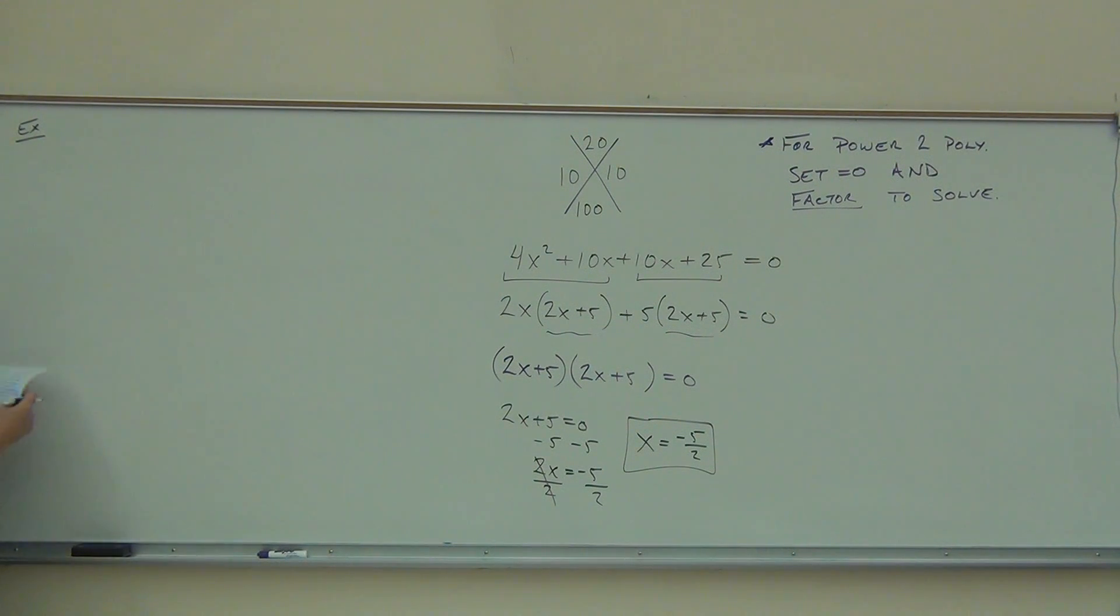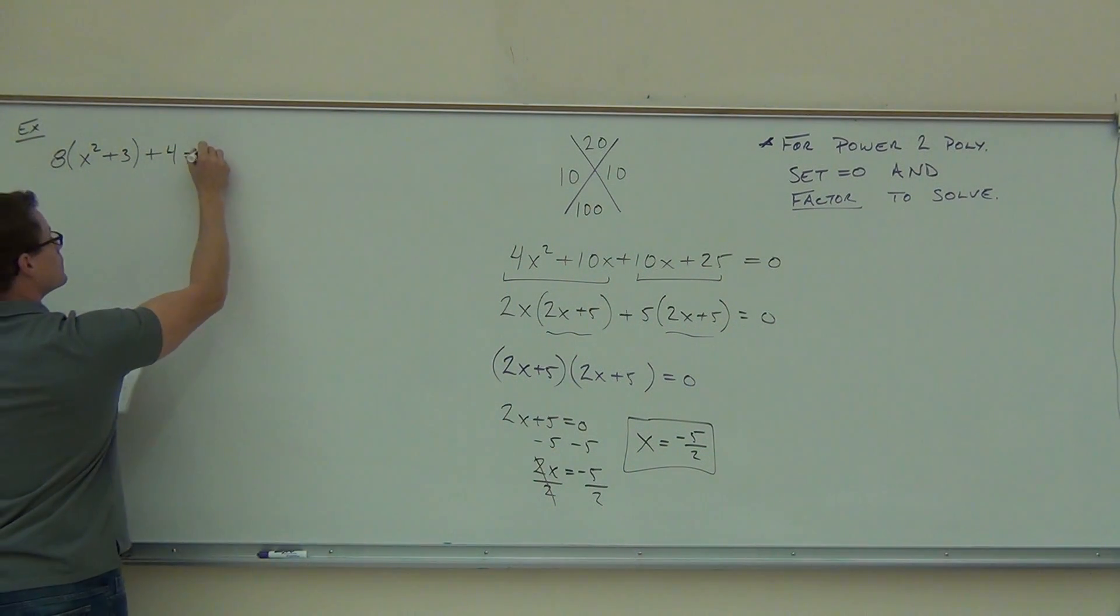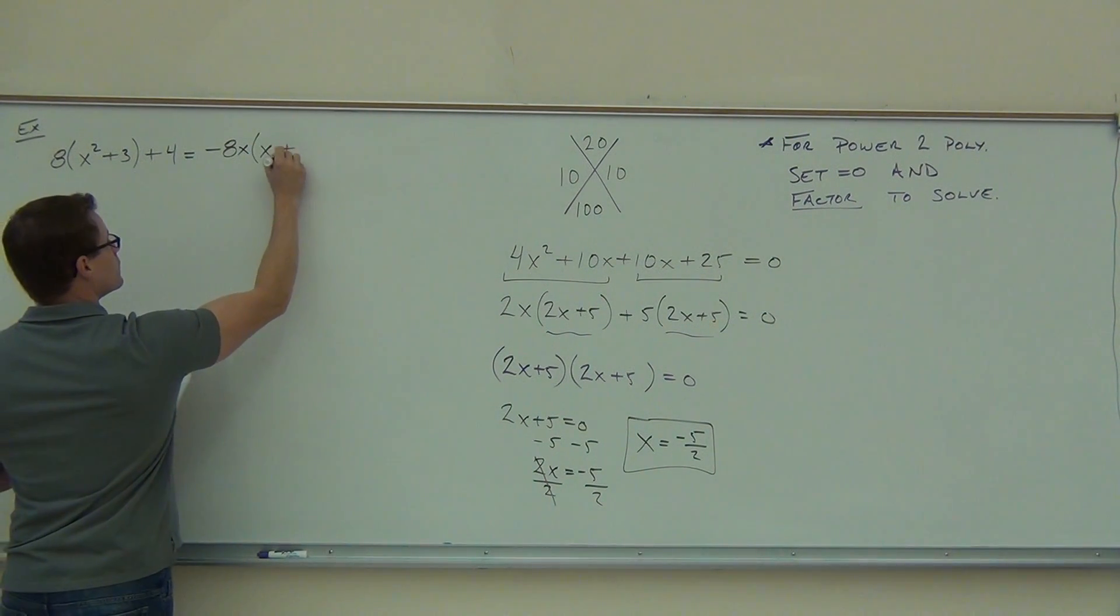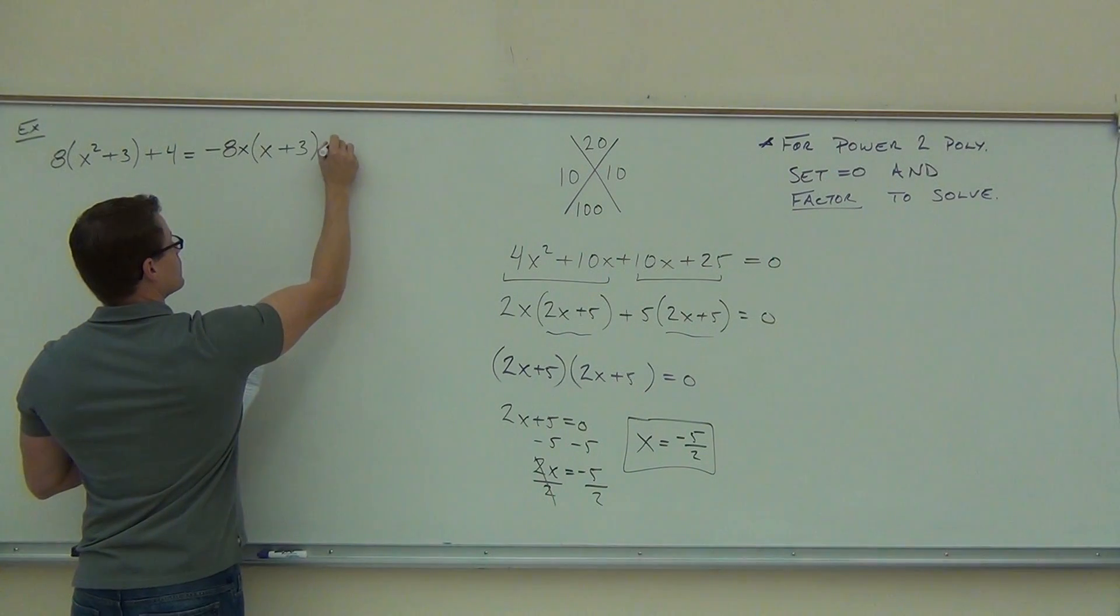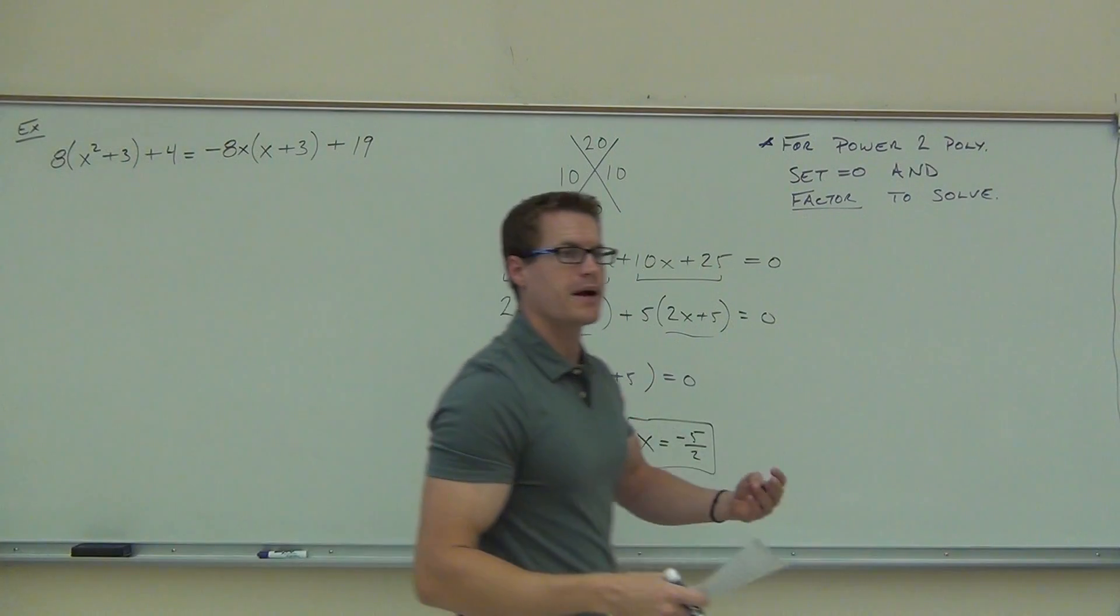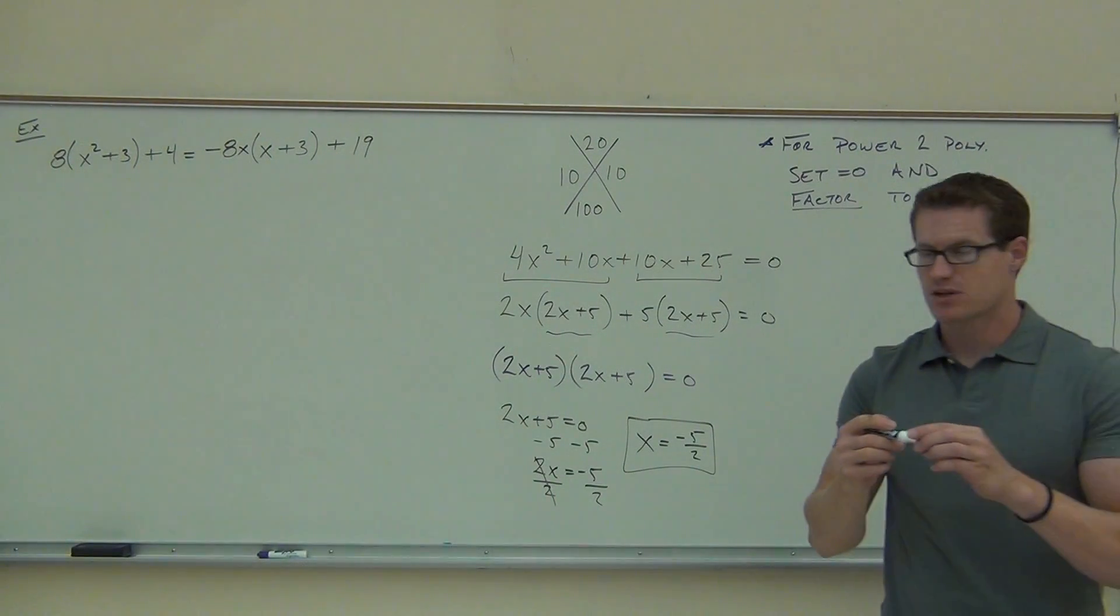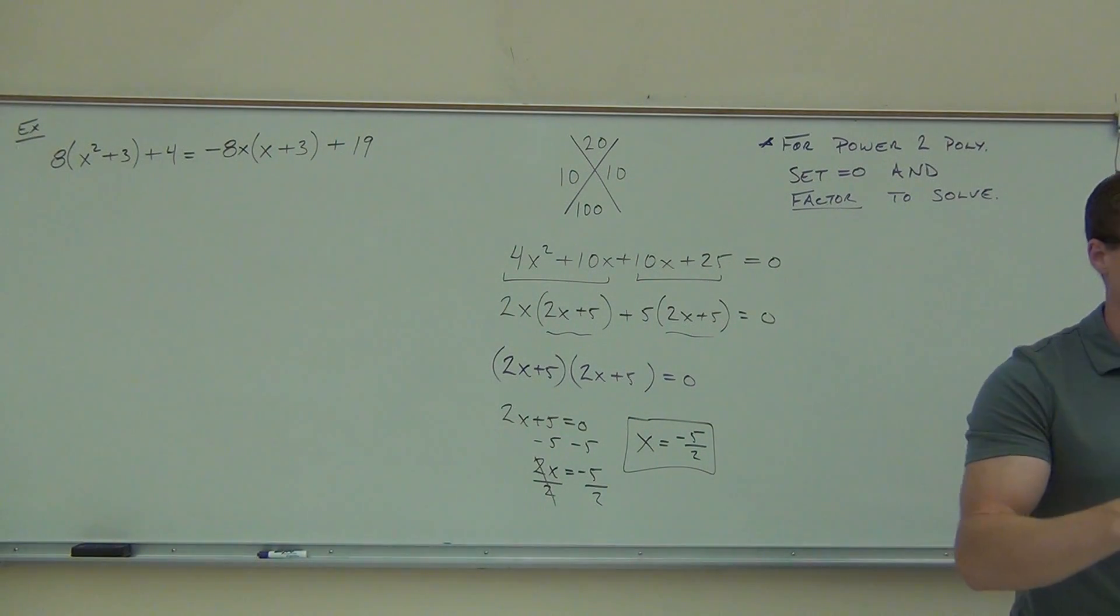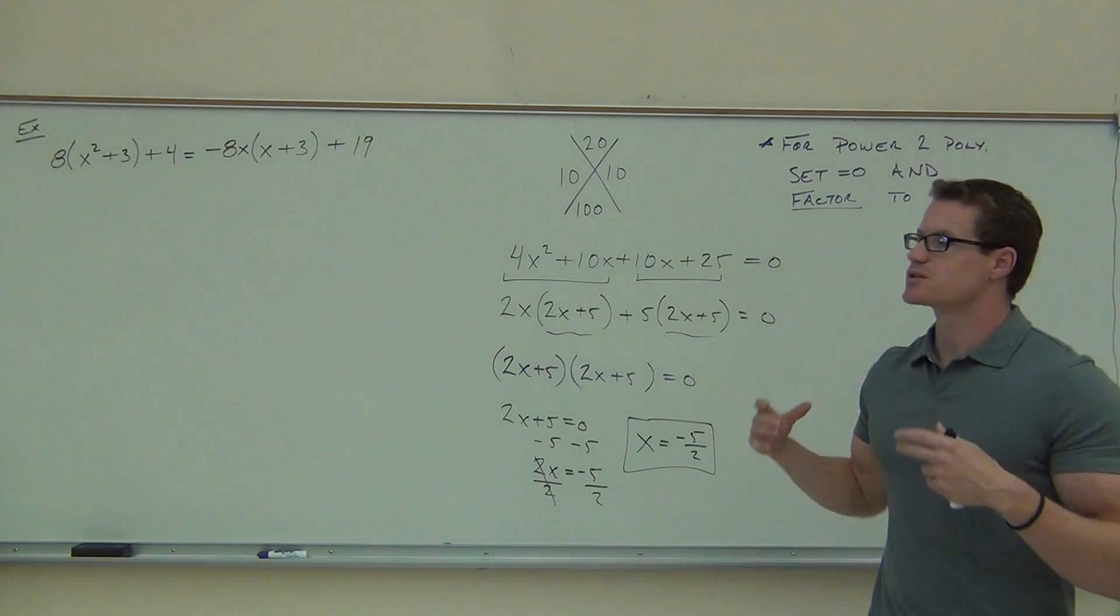This one is going to be quite similar to this last one that we did. So make sure we're simplifying both sides first. That means you might have to combine some like terms. Then look to see if it's a power 2 polynomial or a power 2 equation or not. If it is, we know what to do in that case.